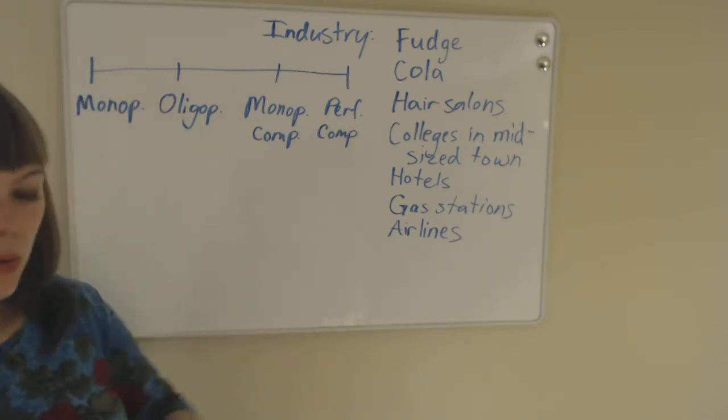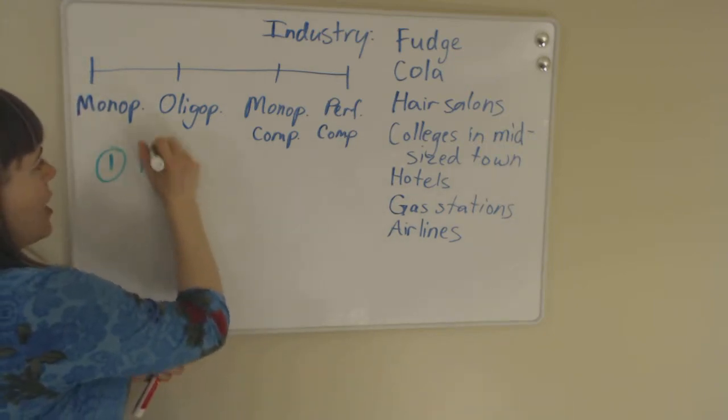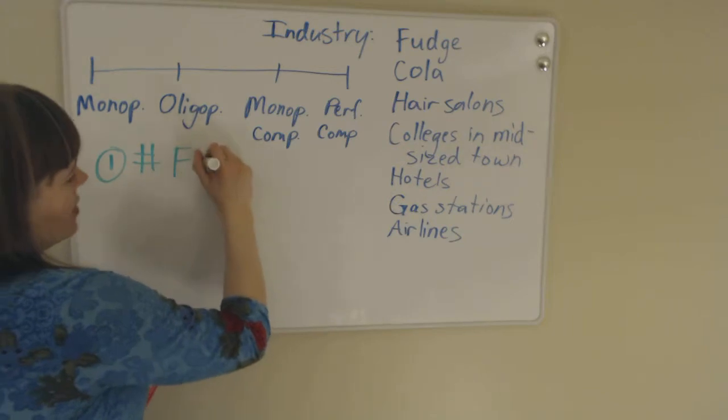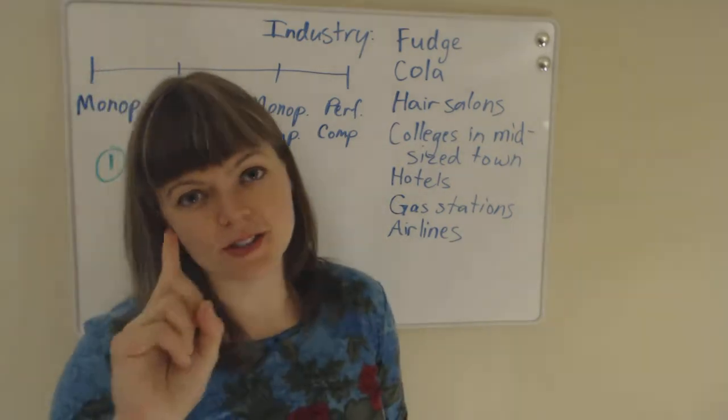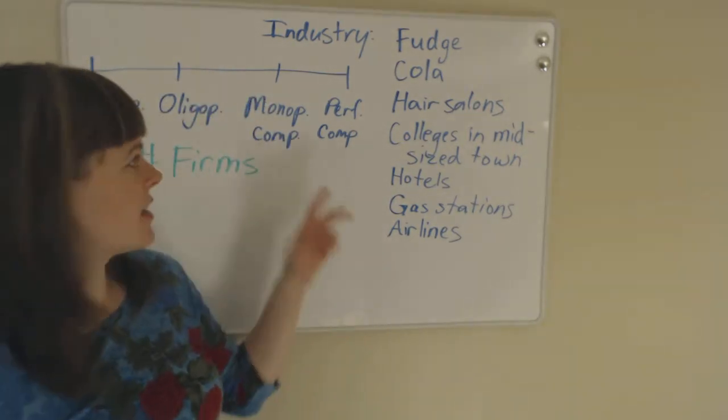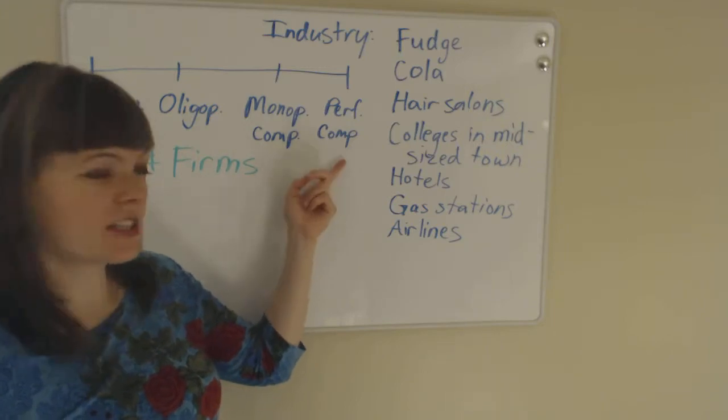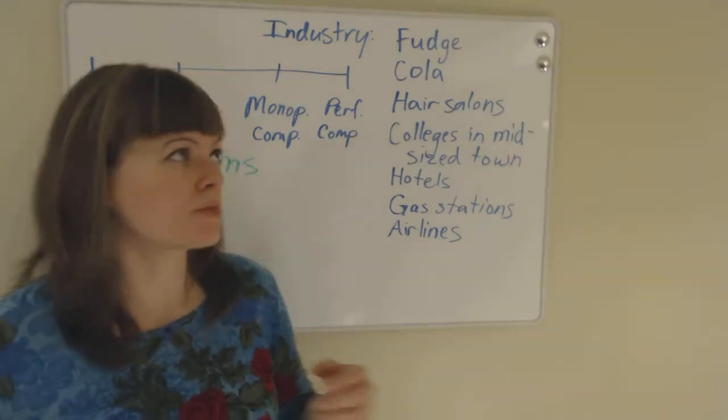So how do we do that? Well, the first step is always going to be to ask yourself how many firms. The number of firms is a big indicator as to what type of industry it is. And of course, if there's only one firm, we know it's a monopoly. If there's lots of firms, it's either going to be monopolistic competition or perfect competition, and that just depends on is there differences across products.